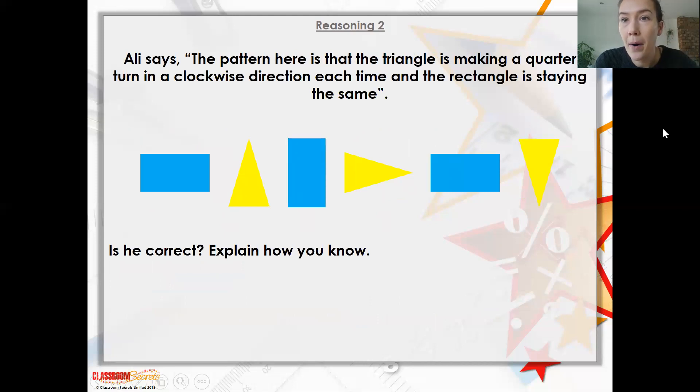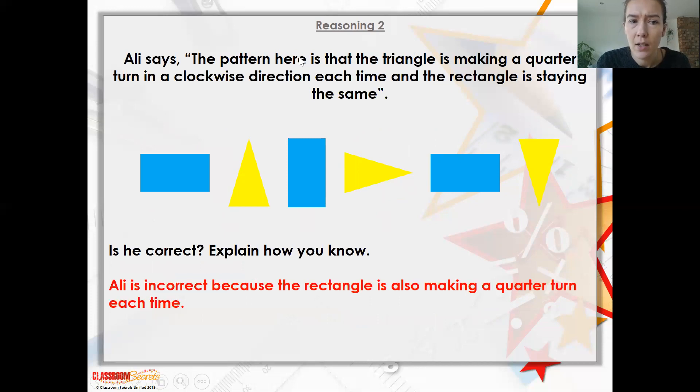Then we've got a bit of problem reasoning. Ali says the pattern here is that the triangle is making a quarter turn in a clockwise direction each time and the rectangle is staying the same. Is he correct? Well, I don't think he is because the rectangle is also making a quarter turn each time.